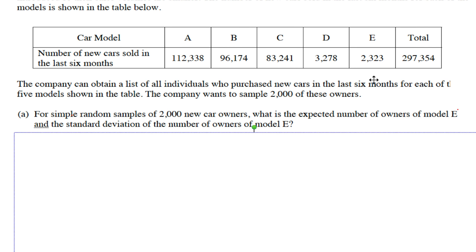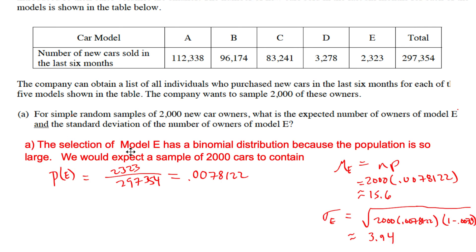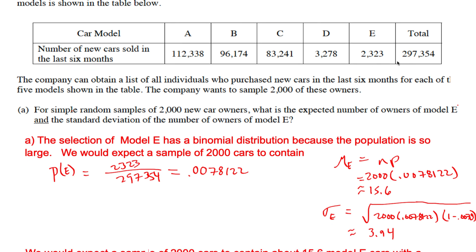In order to figure that out, what do we need to do? What is the probability if you select somebody that they'll have model E? It would be this number out of the total. The selection of model E has a binomial distribution because the population is so large. We should talk about that - if we pull out, the population has to be greater than 10 times the sample size, and that guarantees some independence.